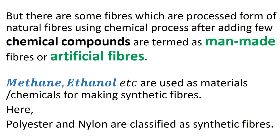But there are some fibers which are processed forms of natural fibers. Using chemical processes after adding few chemical compounds, they are termed as manmade or artificial fibers. Methane, ethanol, etc. are used as materials or chemicals for making synthetic fibers. Here, polyester and nylon are classified as synthetic fibers.